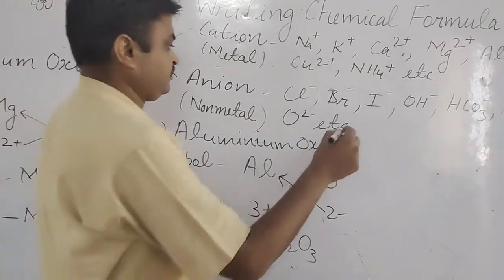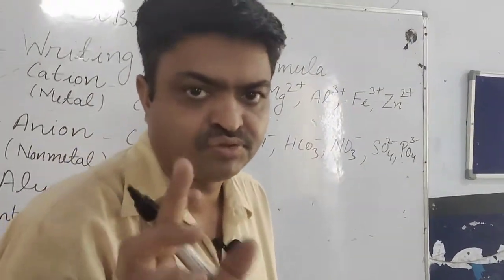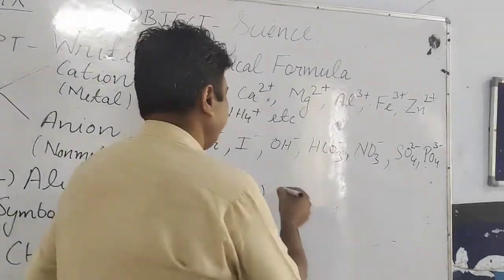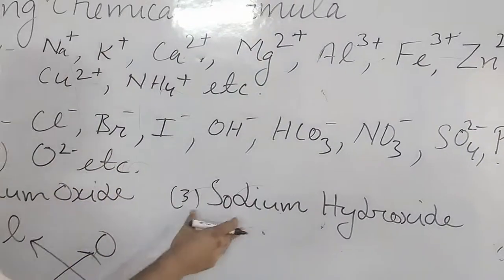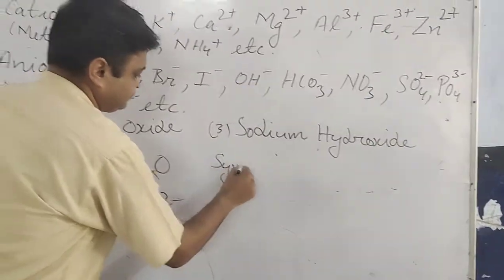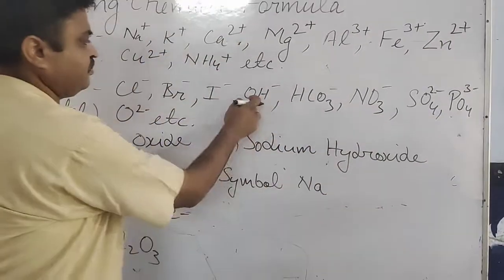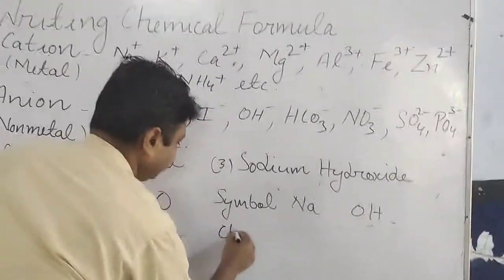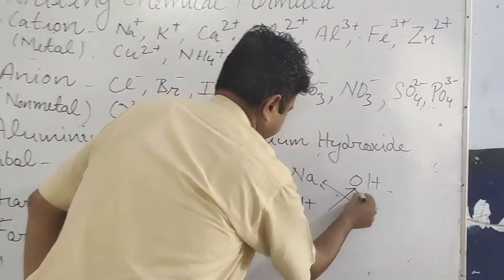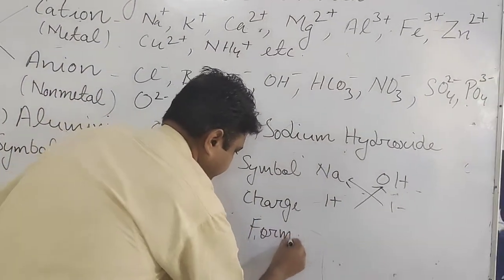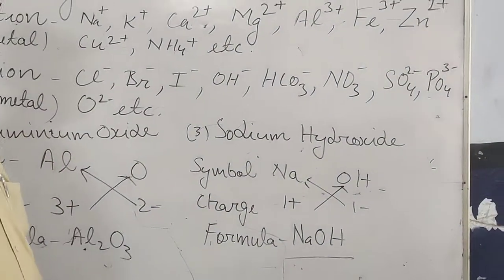Next is a strong base — sodium hydroxide. To find the formula of sodium hydroxide, write the symbol of sodium: Na. Then write the symbol of hydroxide: OH. The charge on sodium is 1 (plus) and the charge on hydroxide is 1 (minus). Now interchange the charges. Since both charges are 1, the formula you get is NaOH. That is the formula of sodium hydroxide.